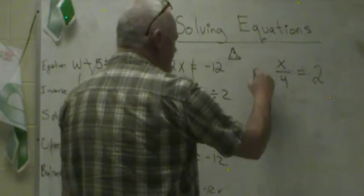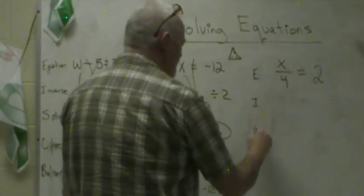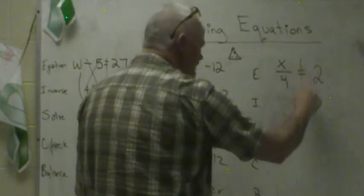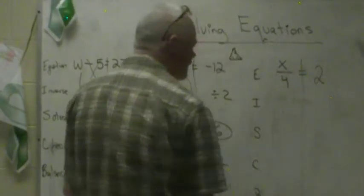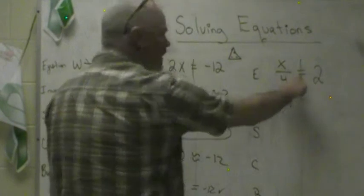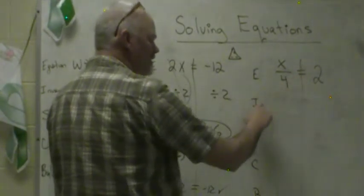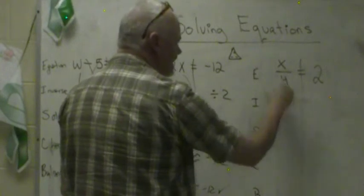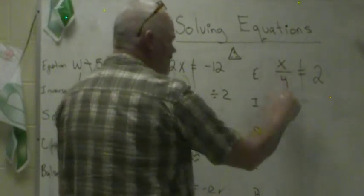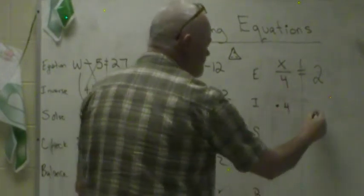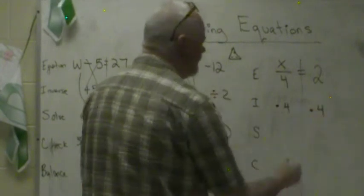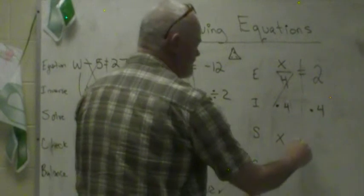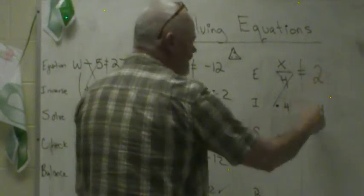Next one. We're dividing. Let me put my E, I, S, C, B. Let me draw my line down through the middle here. We have an equation. We are going to do the inverse of dividing which is multiplying. We're going to multiply by 4. Both sides. That makes this disappear. We bring down the X equals 2 times 4 is 8.